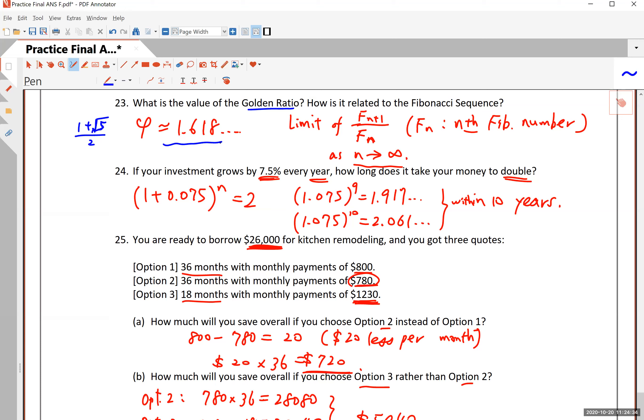It's more precisely 1.618, blah, blah, blah. This goes on forever, but the golden ratio is just about 1.6. And how is it related to the Fibonacci sequence? The answer is,